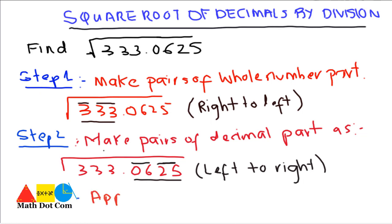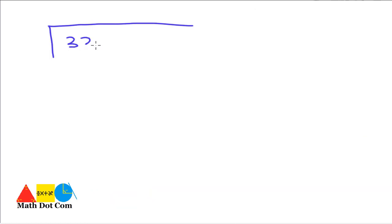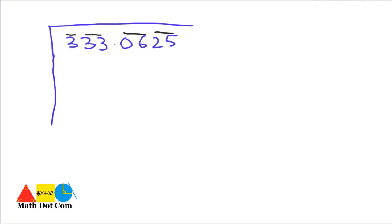In step 3, just apply the division method on it. The number was 333.0625 and the pairs were: '3', '33', '06', '25'. Now, the steps we have to follow in the division method: Step 1 is we have to find the divisor. The divisor must be equal to or less than the first digit or pair, from left to right.